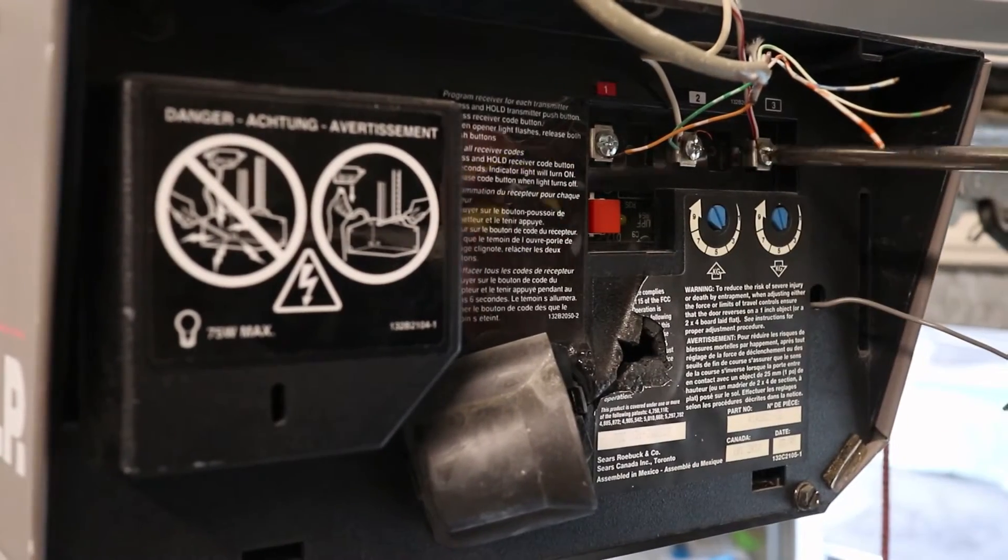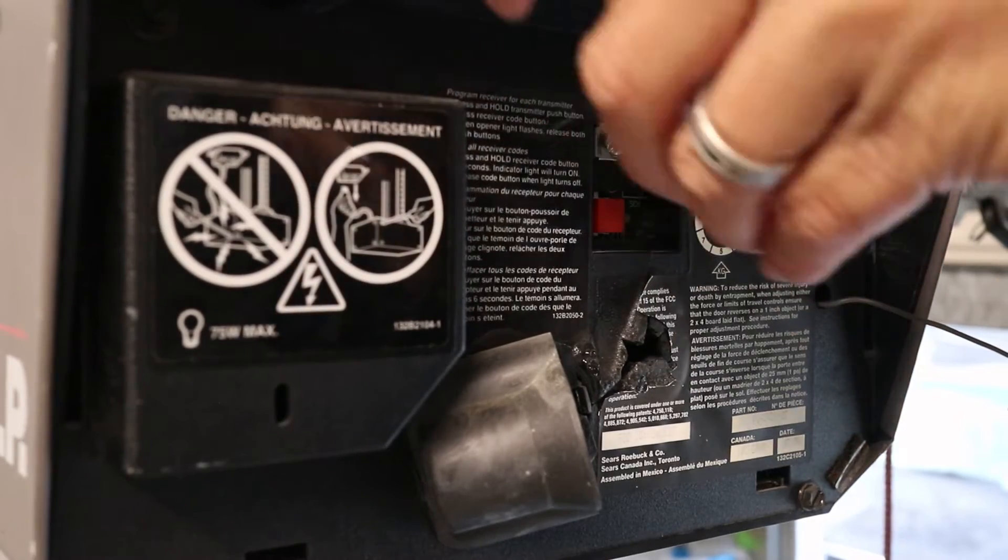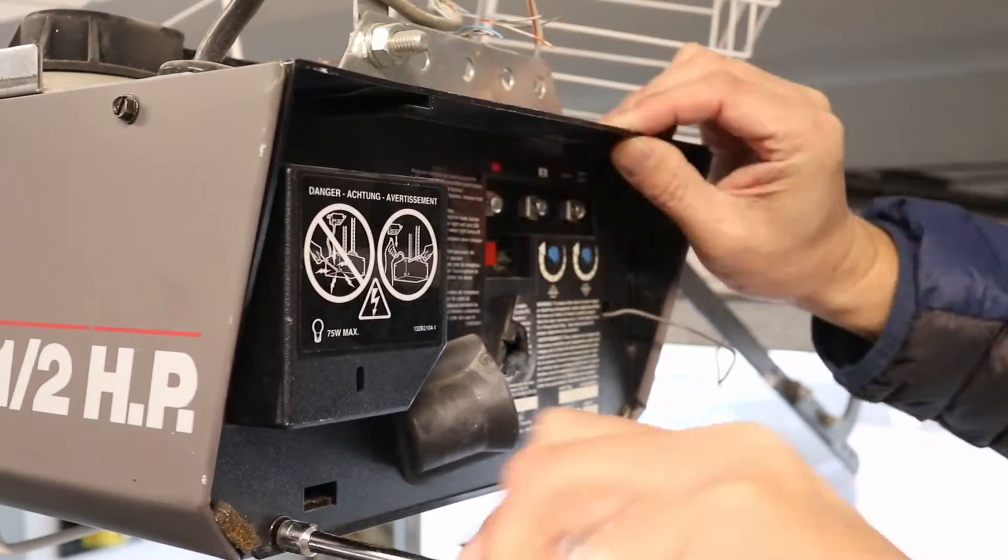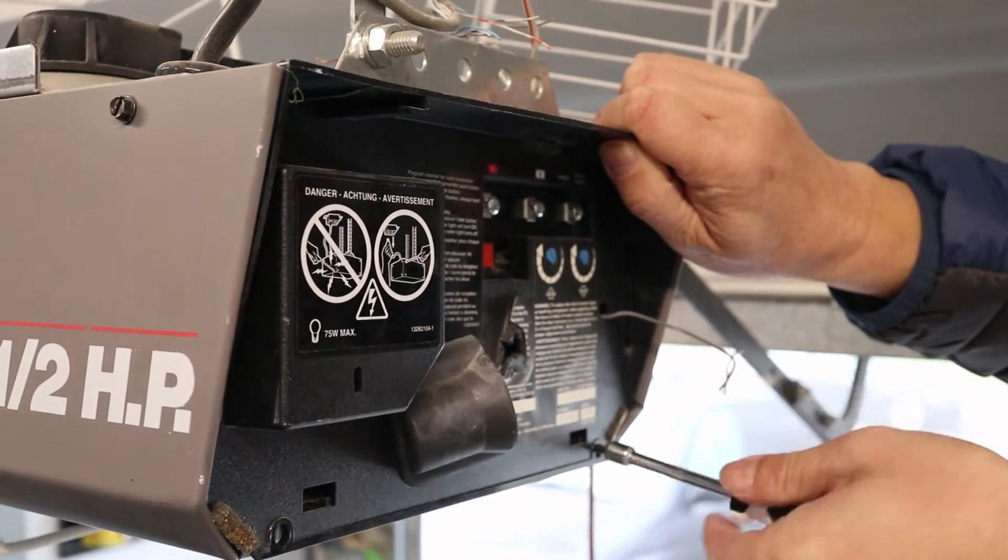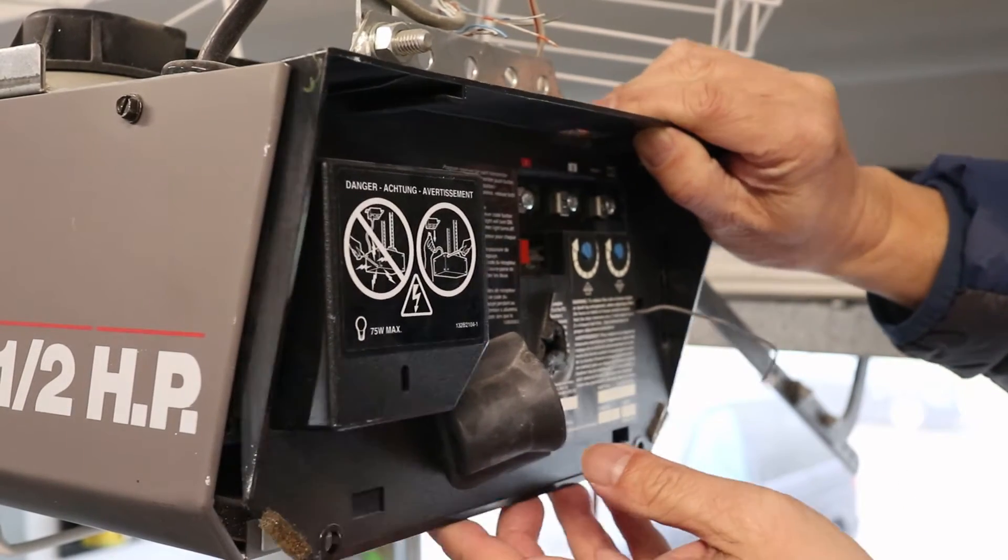Now take out the light bulb and unscrew the wire terminals to loosen them up. Now take out the four screws holding the control panel to the motor housing, and anyone can do this even if you don't have any experience. I'll even list the circuit board in the description so it's easy for you to find.